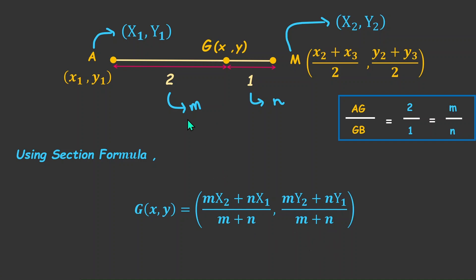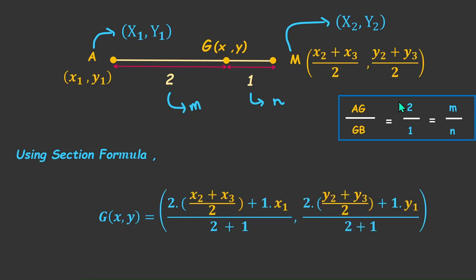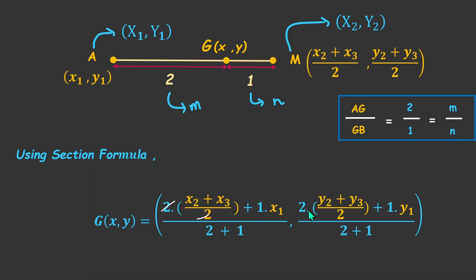So all we need to do now is put in the values. We know m = 2 and X2 = (x2 + x3)/2, while n = 1 and X1 = x1. So we get: [2 · (x2 + x3)/2 + 1 · x1] / (2 + 1) for the x-coordinate, and [2 · (y2 + y3)/2 + 1 · y1] / (2 + 1) for the y-coordinate. We can cancel the 2 from numerator and denominator in each term, leaving us with (x1 + x2 + x3) / 3 and (y1 + y2 + y3) / 3.